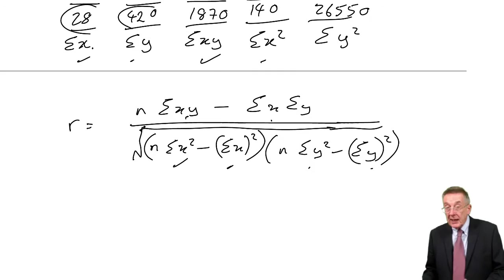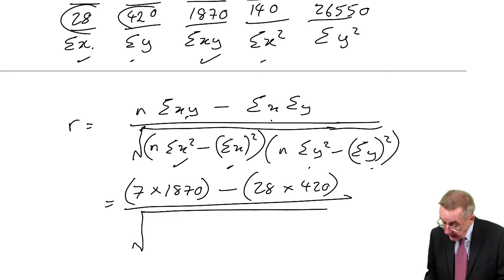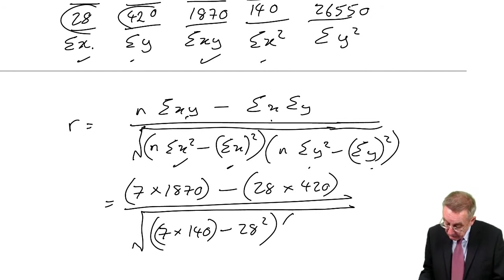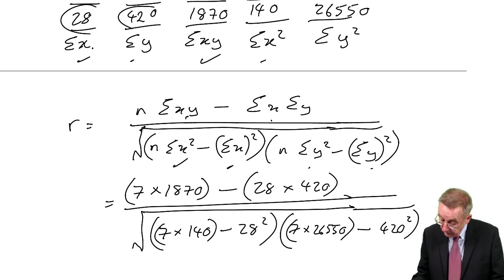Again, it now simply becomes calculator work. And again, I'll do it line by line. Hopefully nobody will get lost. That's n times 7, sigma x times y, 1870, minus sigma x, 28, times sigma y, 420, divided by the square root of n times 7, sigma x squared, 140, minus sigma x all squared, 28 squared, times n times 7, sigma y squared, minus sigma y all squared.